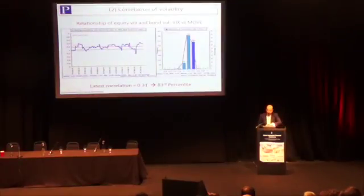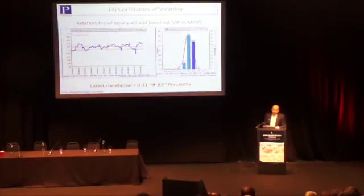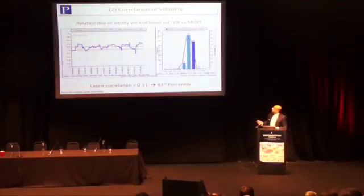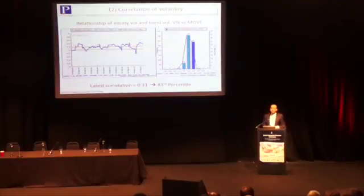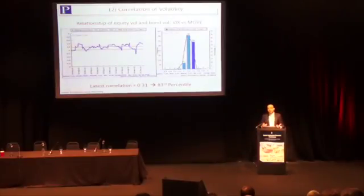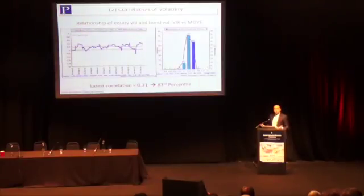Turning to the second dimension of correlation of volatility — the relationship between the risks — here I'm using two forward-looking measures: the VIX for US equity volatility, and the Merrill Lynch MOVE index, which is a forward-looking bond volatility measure. Looking at the relationship between these two over the last three years, we are at relatively stretched levels in the top quintile. In this case, we're finding that the relationship between the risks is far closer than it has been historically, so from the point of view of allocating a risk budget, this needs to be taken into account.